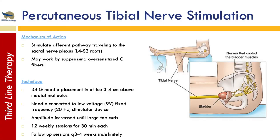Next we'll talk about percutaneous tibial nerve stimulation, or PTNS. This works by stimulating the afferent pathway from the L4 to S3 roots in the sacral nerve plexus. Within the plexus there are over-sensitized C fibers that lead to over-activation of the micturition center, and over-stimulation of them can help overcome this over time. An acupuncture needle is put into the tibial nerve about three to four centimeters above the medial malleolus. The needle is connected to a stimulator device at a constant frequency, and the amplitude is increased until the patient can't tolerate it. The goal is to get the large toe to curl.